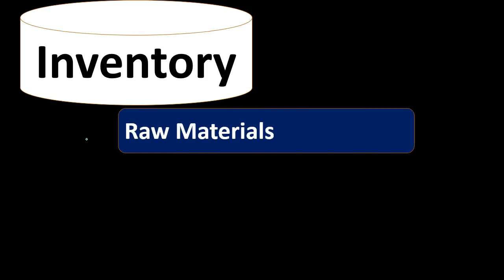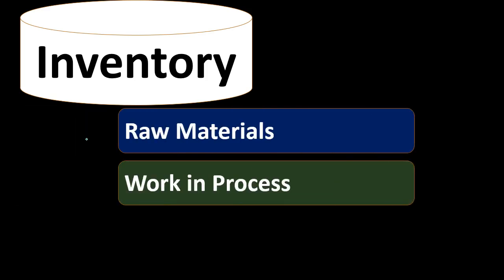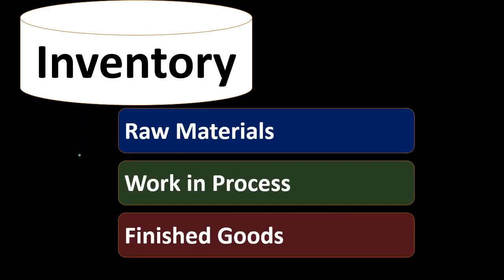When we go from a company that just purchases and sells inventory to a company that actually manufactures and produces the inventory, then the inventory could be broken out into components. We're going to have raw materials inventory, work in process inventory, and finished goods inventory. These may be grouped on the balance sheet in different ways — broken out into subcategories or consolidated in some way.